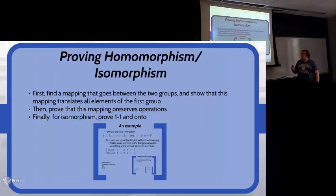How to prove a homomorphism or isomorphism? First, you need to find a mapping between the two groups that is well-defined. That is, everything translates elements of the first group to something in the second. Then you have to show that it preserves operations for a homomorphism. And if you're proving isomorphism, you have to show that it's both one-to-one and onto.